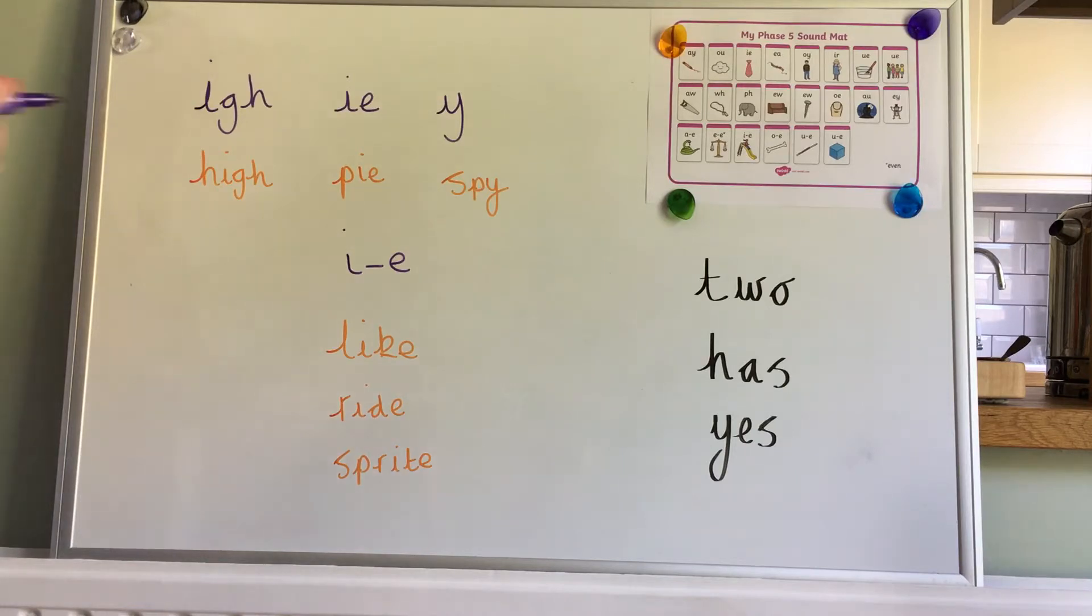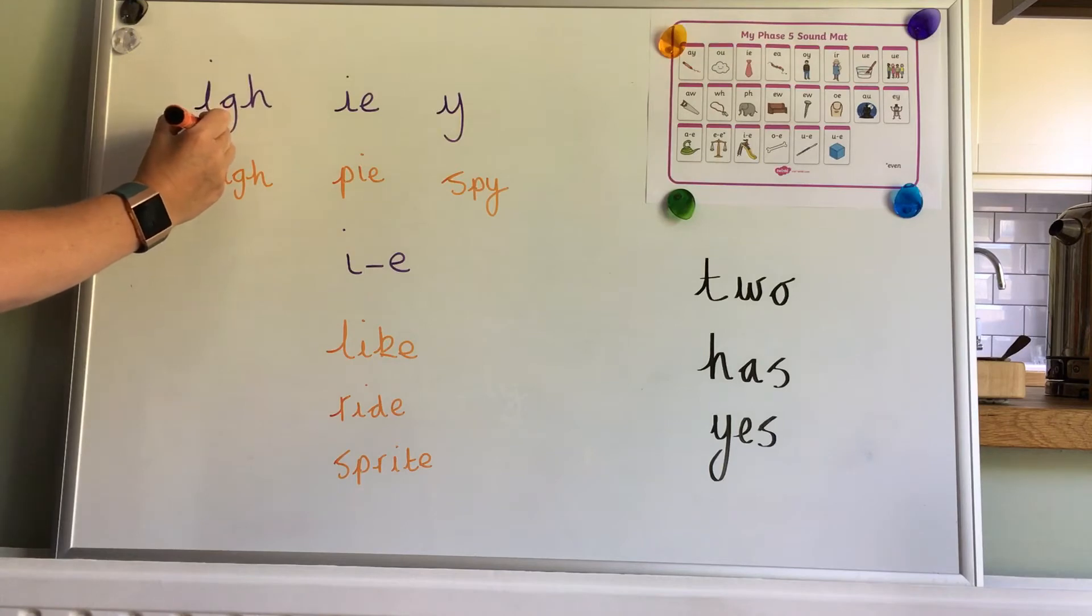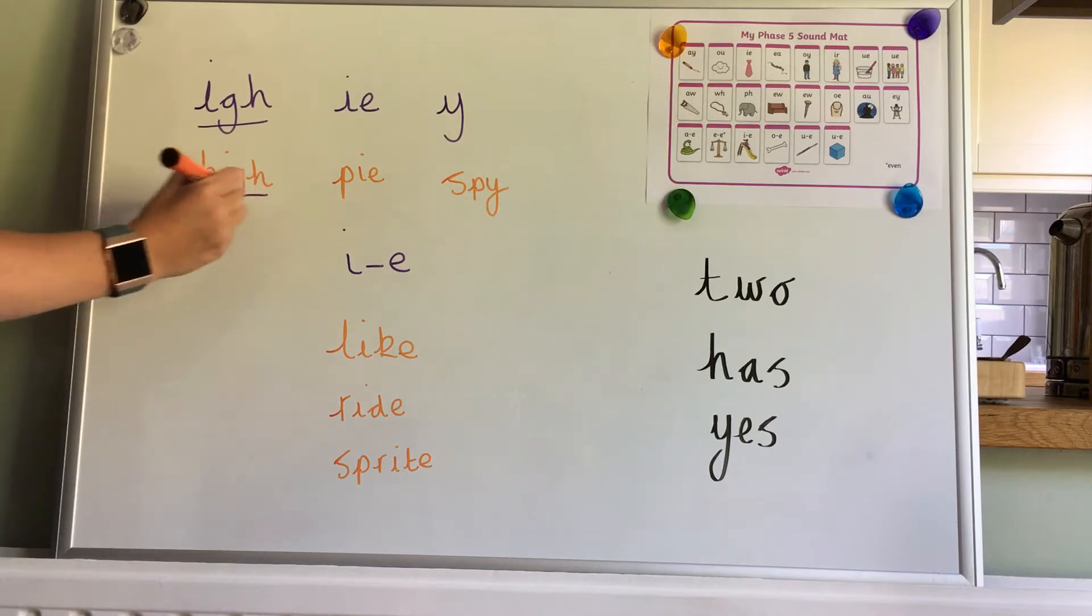First we looked at our phase 3 trigraph I-G-H, and it came in words like this: H-I-G-H, high.